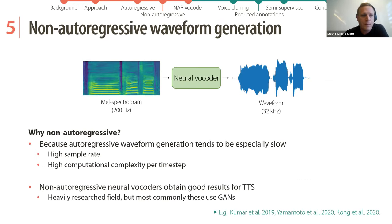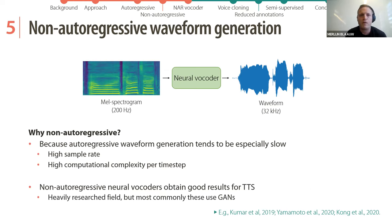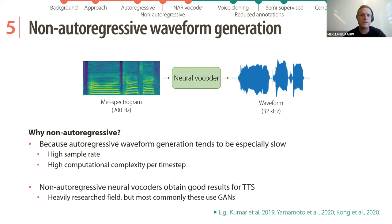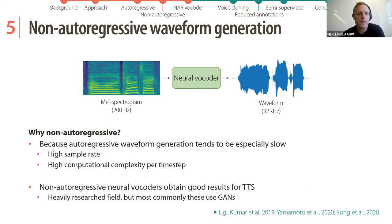The final work in this part is a non-autoregressive model for waveform generation. Now that we have a non-autoregressive timbre model, we also want a non-autoregressive waveform generation — a neural vocoder. It's important that it's non-autoregressive because autoregressive waveform generation tends to be very slow, due to the high sample rate and high computational complexity per time step.